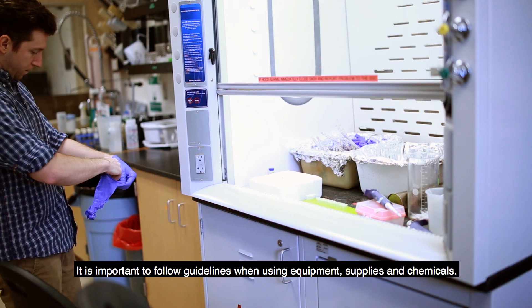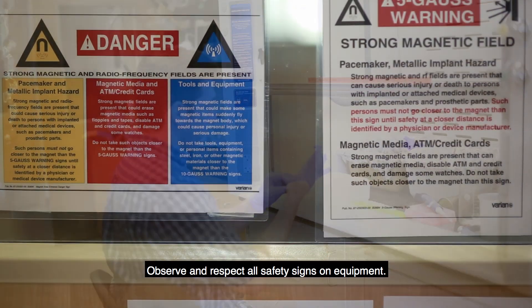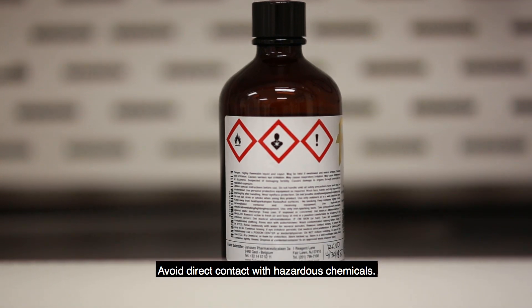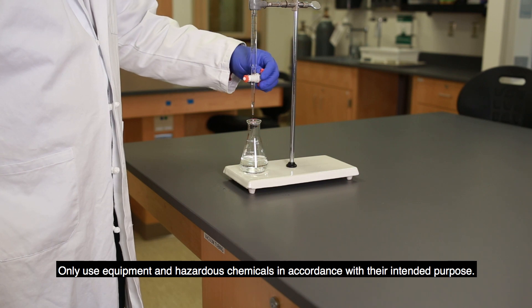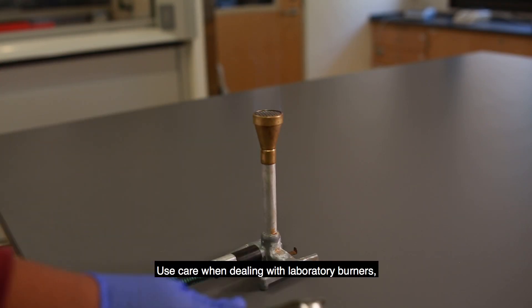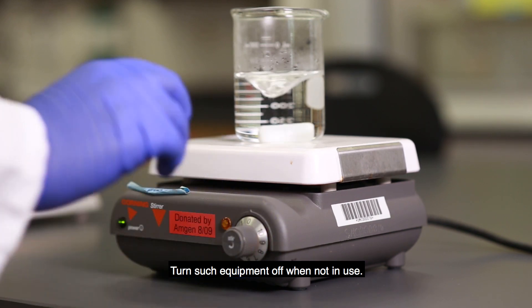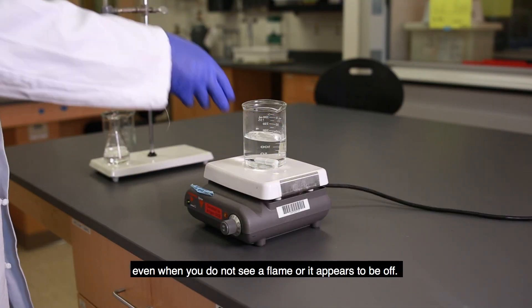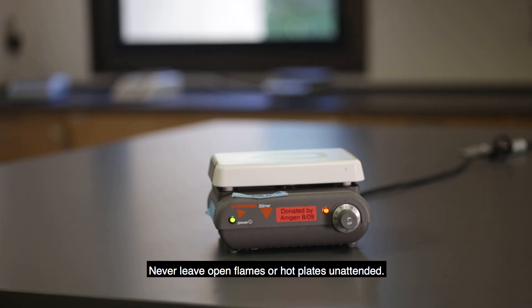It is important to follow guidelines when using equipment, supplies, and chemicals. Observe and respect all safety signs on equipment. Avoid direct contact with hazardous chemicals. Only use equipment and hazardous chemicals in accordance with their intended purpose. Use care when dealing with laboratory burners, hot plates, and steam generators. Turn such equipment off when not in use. Always handle such equipment as if it were hot, even when you do not see a flame or it appears to be off.